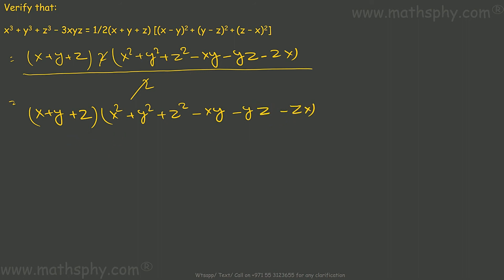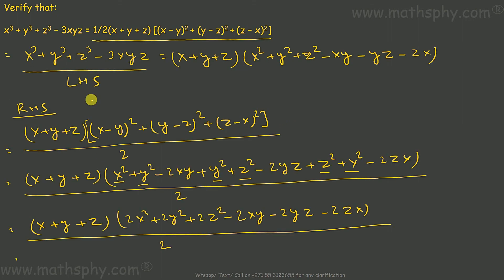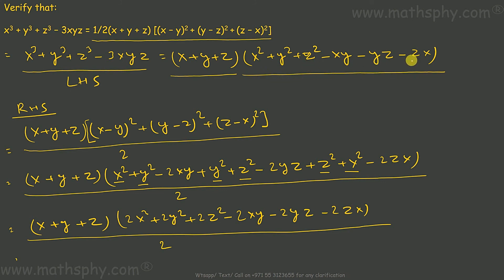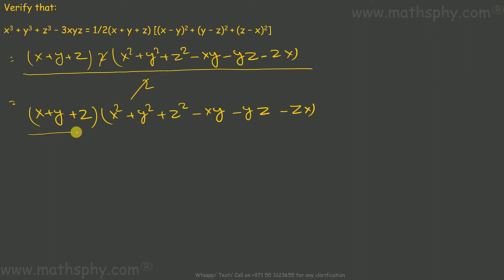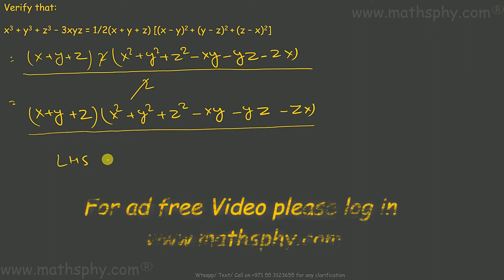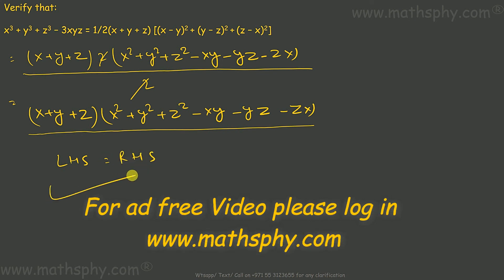The left hand side was expanded to x plus y plus z times x squared plus y squared plus z squared minus xy minus yz minus zx. And the right hand side also came to the same result. It means left hand side is equal to right hand side — verified.